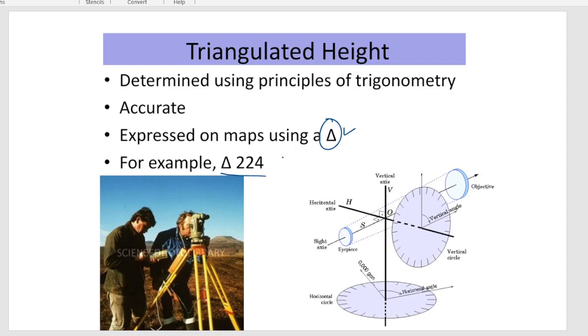In your toposheet you can see something around triangulated height 224 or maybe triangulated height 256 or triangulated height 576 and so on. The digits, values, everything might vary. But this indicates the accurate determined principles of trigonometry. This triangulated height is also referred to as the triangulation points or triangulation stations whose heights from mean sea level are calculated using the trigonometry.